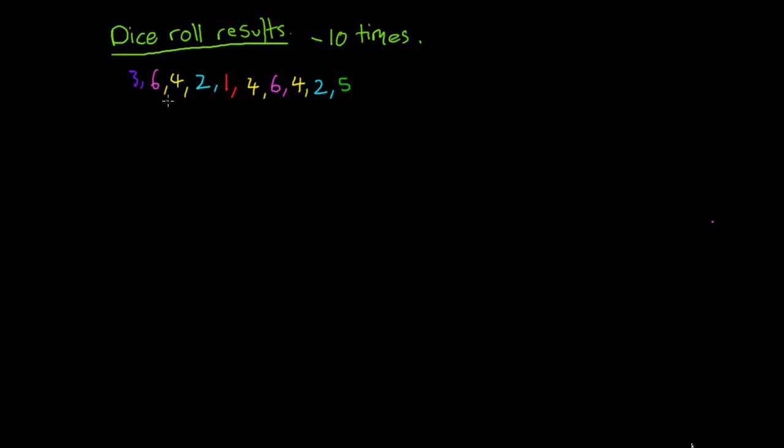So I got a 3, a 6, a 4, a 2, a 1, a 4, a 6, a 4, a 2, and a 5. And what we're going to use this data for is we're going to use it to draw what we call a dot plot. So it's exciting stuff this morning.